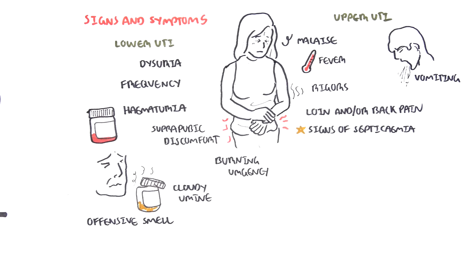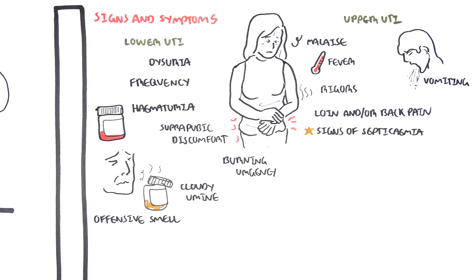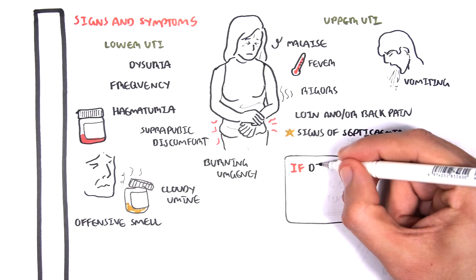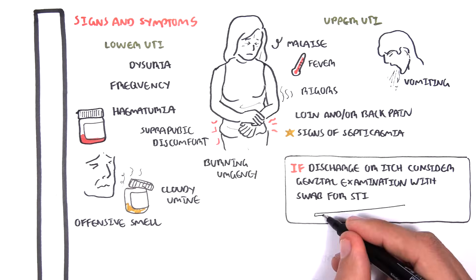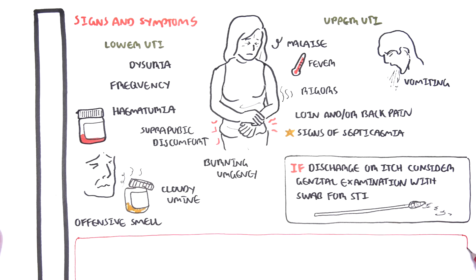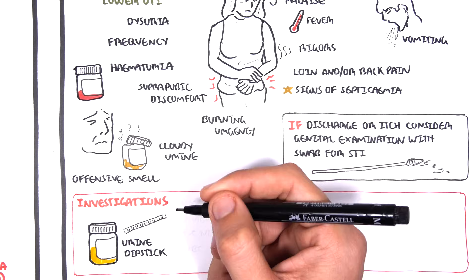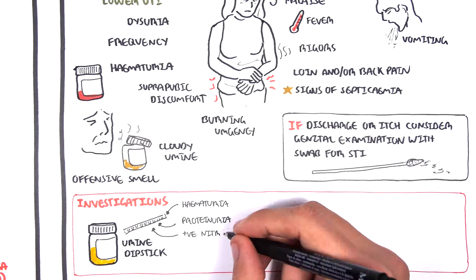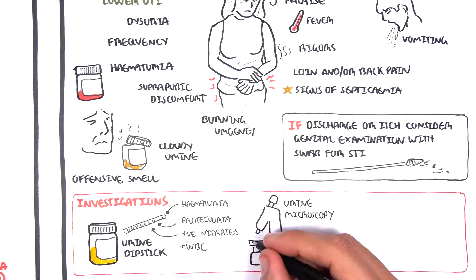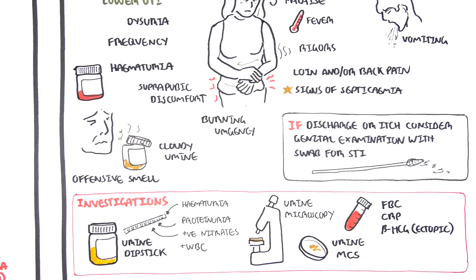Let's go through an algorithm for managing urinary tract infection. It is important to remember that if there is discharge or itch with signs of UTI, perform a genital examination with swab to check for a sexually transmitted infection. A characteristic of STI is having discharge with a fishy smell. Other investigations include a urine dipstick, which will show hematuria, proteinuria, and positive nitrites. Urine microscopy can be performed, as well as urine microscopy culture and sensitivity. Bloods include full blood count to check for infection, CRP, and beta-HCG serum to check for ectopic pregnancy as a differential diagnosis, especially in a young female adult.